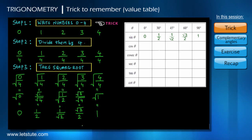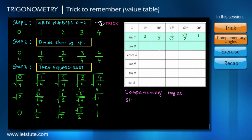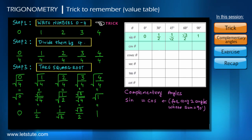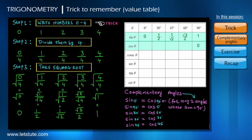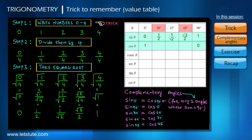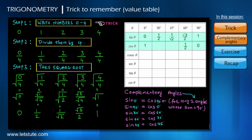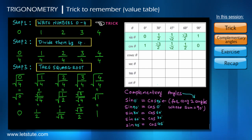Once we know the values of sine, to get the values for cosine we use the concept of complementary angles, which says that the values of sine and cosine are the same for any two angles whose sum is 90 degrees. So since 0° and 90° are complementary, cosine 90° equals sine 0°, which is 0, and cosine 0° equals sine 90°, which is 1. Since 30° and 60° are complementary, cosine 60° equals sine 30°, which is 1 upon 2, and cosine 30° equals sine 60°, which is root 3 upon 2. Similarly, sine 45° equals cosine 45°.